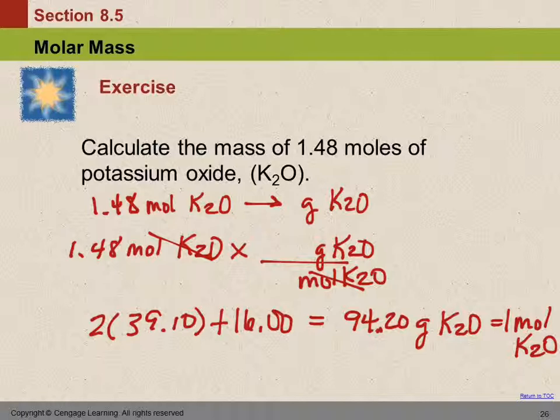The masses on the periodic table in grams tell us how much 1 mole of that element weighs. We're looking at 1 mole of K2O. It has 2 moles of potassium and 1 mole of oxygen. We add them up. We get 94.2. We stick them in this equation, 94.20 grams per 1 mole. We multiply by 1.48, and we get a number.